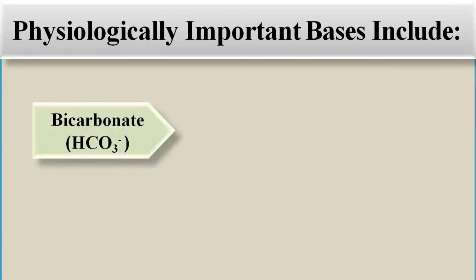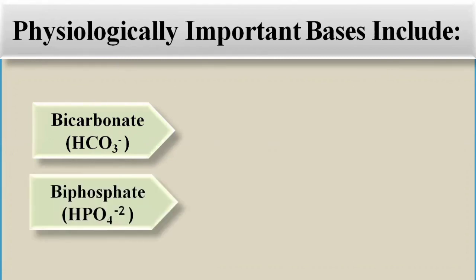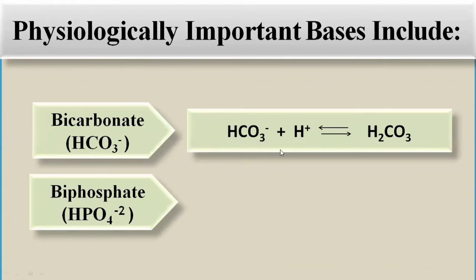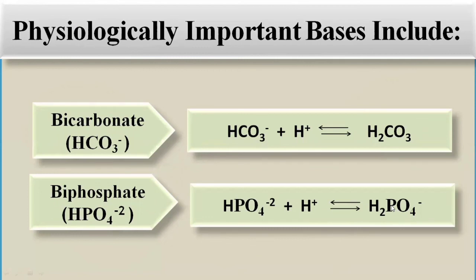The physiologically important bases in the human body are bicarbonate and biphosphate. Bicarbonate (HCO₃⁻) accepts the hydrogen ion to reform carbonic acid (H₂CO₃). Biphosphate accepts the hydrogen ion to reform H₂PO₄⁻. These bases are required to maintain homeostasis — accepting excess hydrogen ions to balance the acidic environment of the human body.